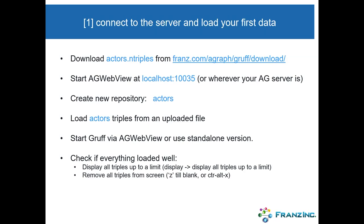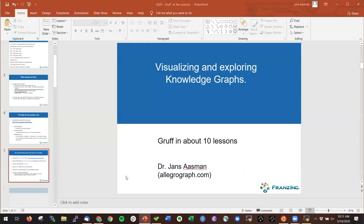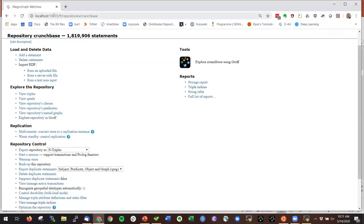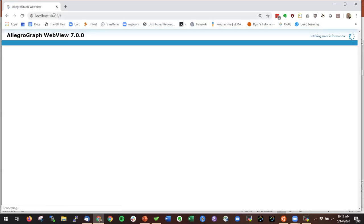Now let's begin with Lesson 1: connecting to the server and loading your first data. We assume you have AllegroGraph installed somewhere. I'm going to download the actors file, go to my local installation of AllegroGraph, create a new repository called actors, load the actors data, start Gruff, and check if everything loaded well. Here is my browser — I connect by going to localhost, and I'm now connected to my local AllegroGraph.